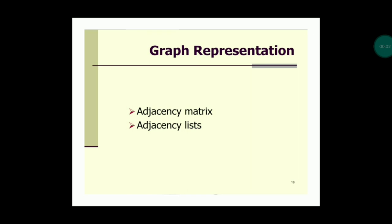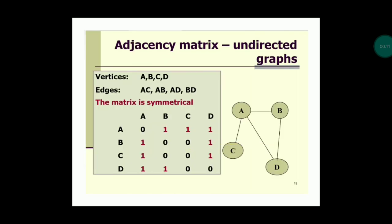For graph representation, there are two types: adjacency matrix and adjacency list. In an adjacency matrix for undirected graphs, vertices a, b, c, d appear on both axes. The edges are a-c, a-b, a-d, and b-d. The matrix for an undirected graph is symmetrical.